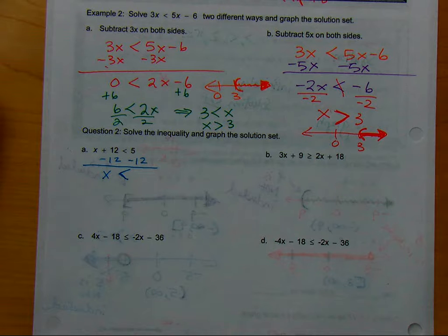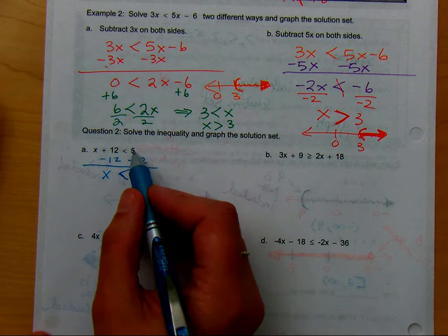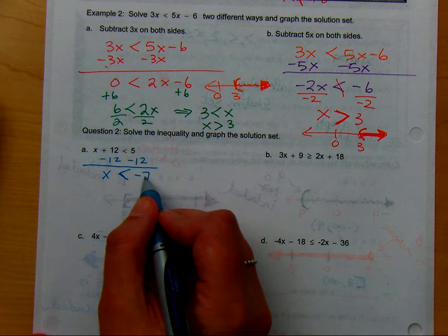Leave it. Why do I leave it? Exactly. If I don't multiply or divide by a negative, I'm going to leave the inequality as is, and then 5 minus 12 is negative 7.